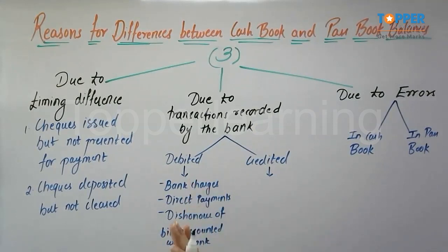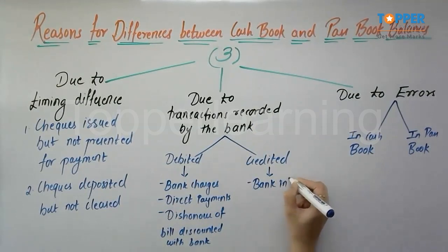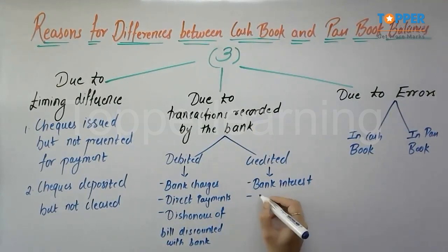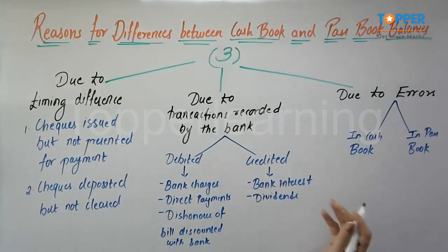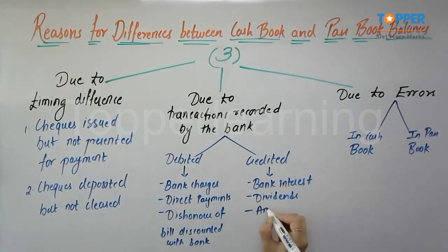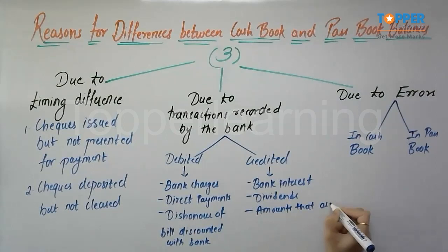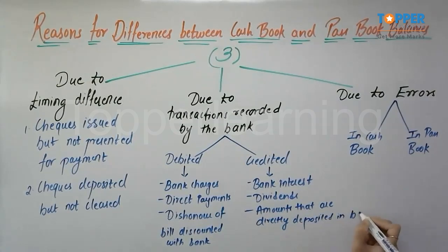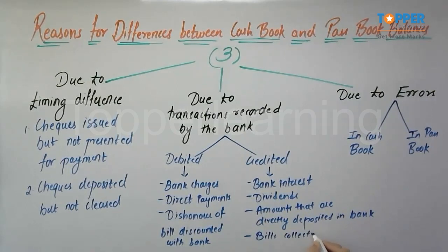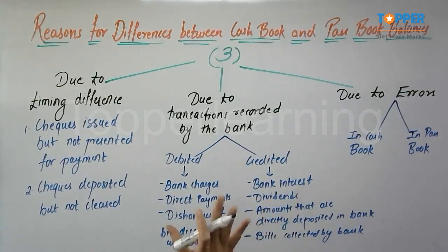When we talk about transactions that are credited by the bank, there is bank interest credited at regular intervals. Along with that, there are dividends directly collected by the bank, amounts directly deposited in the bank account, and bills collected by the bank. It is possible that bills with respect to sale transactions are collected by the bank and the amount is directly credited to the bank account.